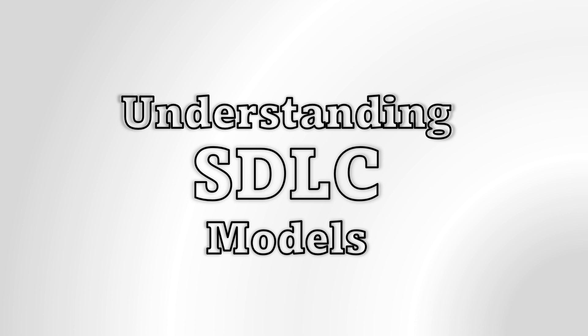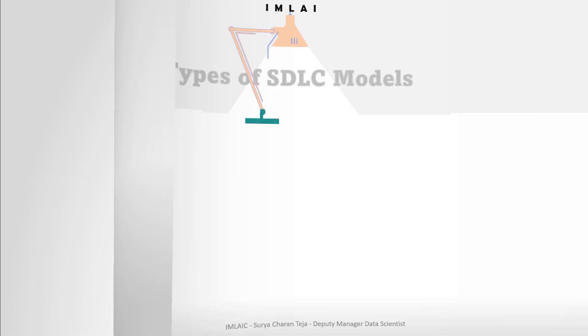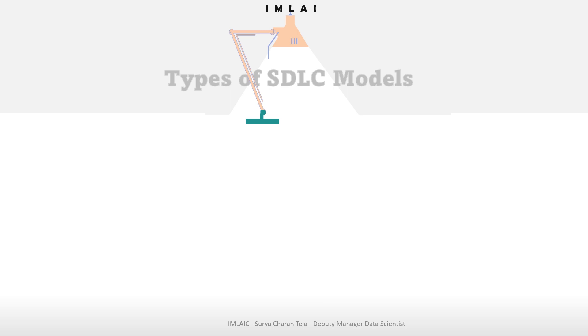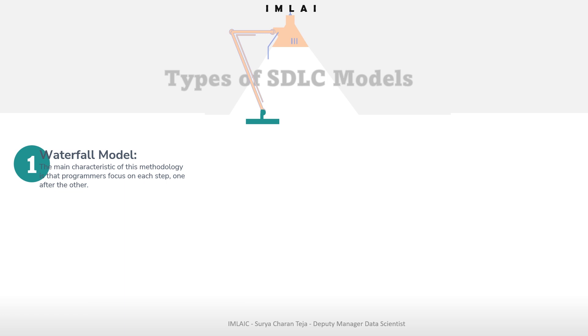Having looked at all phases of the SDLC, we now move to understanding the different SDLC models widely used in the industry. The most common and famous one is the Waterfall model. This SDLC model is the most straightforward type and is essentially the oldest. The main characteristic is that programmers focus on each step one after the other.